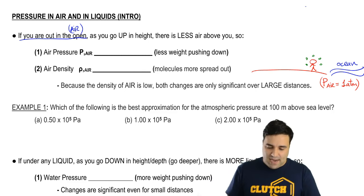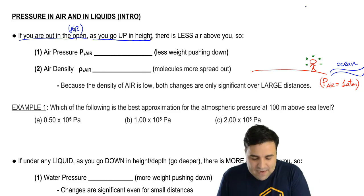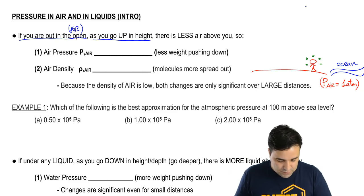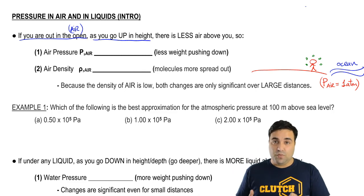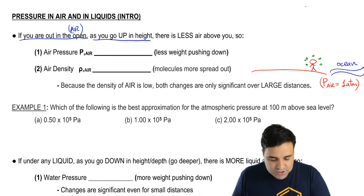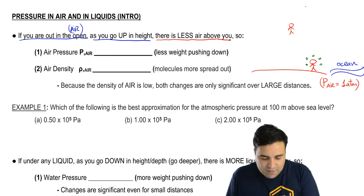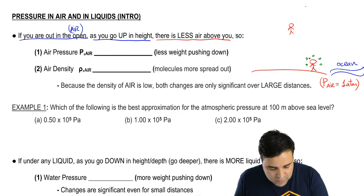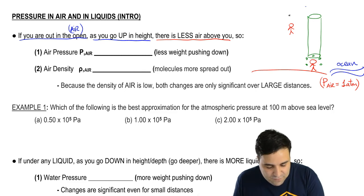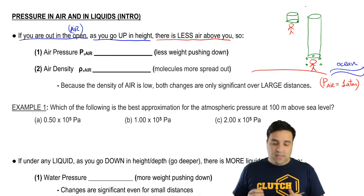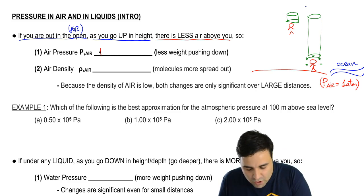Now as you go up in height, the pressure will change. The easiest way to remember what happens to air pressure — whether it increases or decreases — is to think that if you go up in air, there's going to be less air above you. You can imagine there's a column of air molecules on top of you at a lower elevation, but at a higher elevation there's a smaller column. Because there's less air on top of you, the air pressure will be lower — it will decrease.